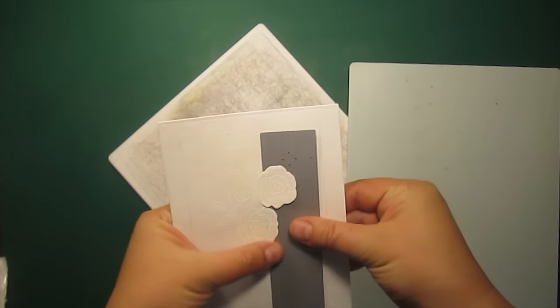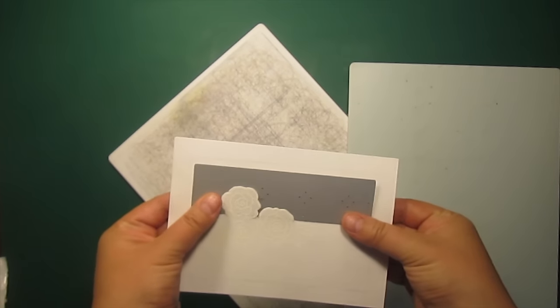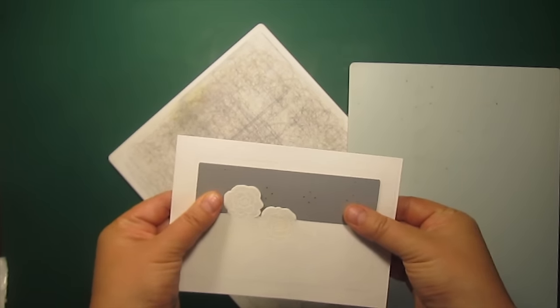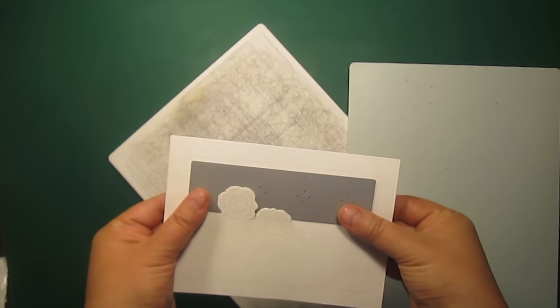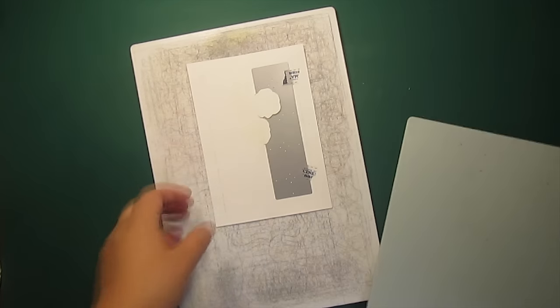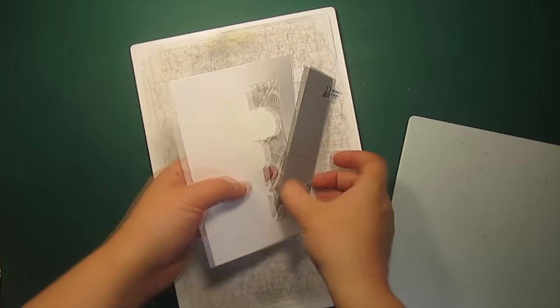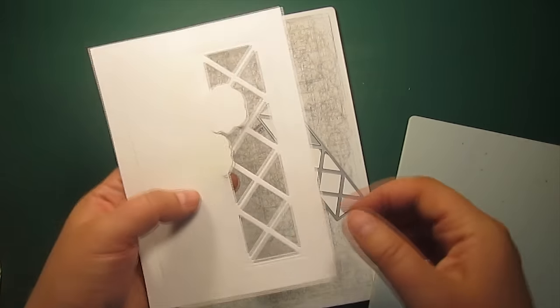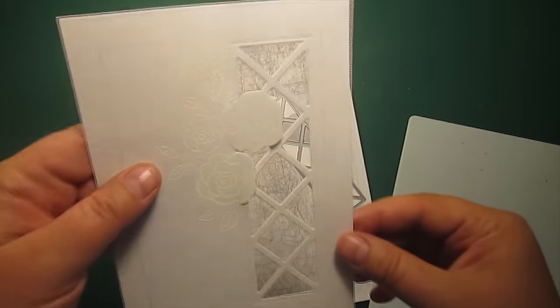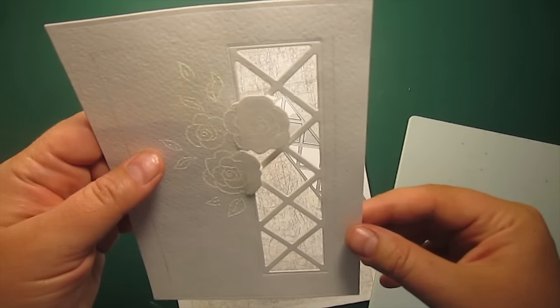Now I'm tucking the lettuce die behind the flowers and running it through the machine again. The result is the roses overlapping the lettuce, but the whole piece is still one layer.